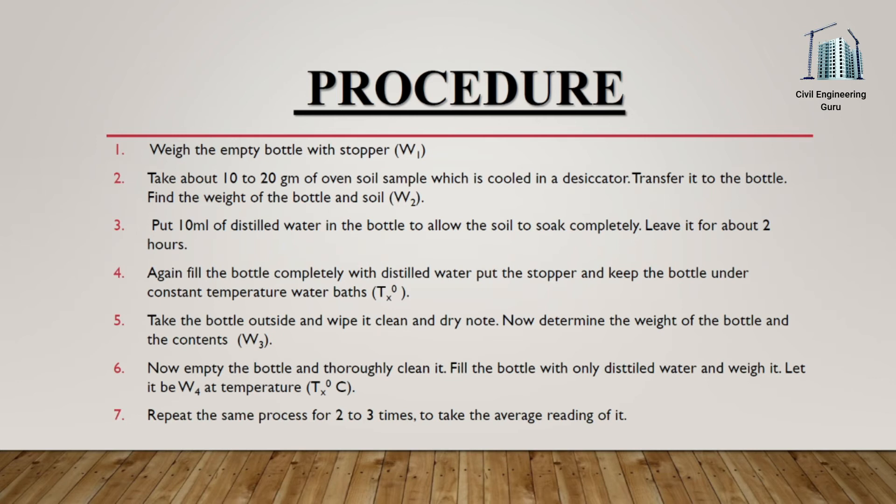Take the bottle outside, wipe it clean and dry, and note the reading. Determine the weight of the bottle and its contents. Empty the bottle and thoroughly clean it. Fill the bottle with only distilled water and weigh it at the same temperature. Repeat the same process two to three times and take the average reading.